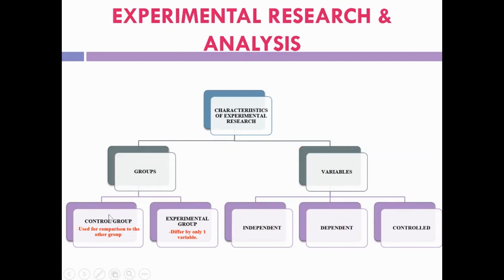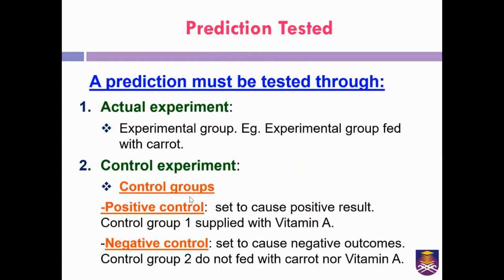There are two types of groups: the control group and the experimental group. The control group is the group that does not receive the treatment, while the experimental group, also known as the treatment group, is the group that receives the treatment. The control group is used for comparison to the other group, and these two groups differ by only one variable.